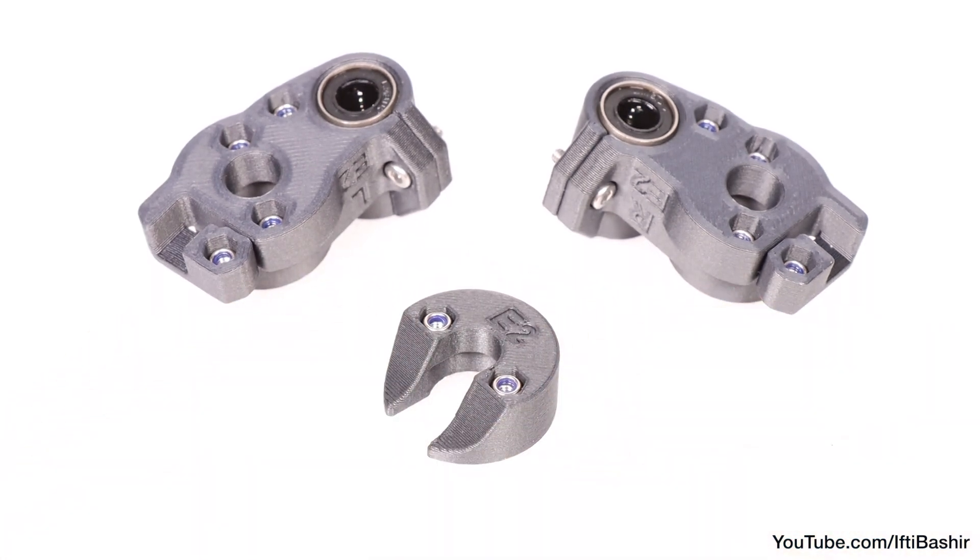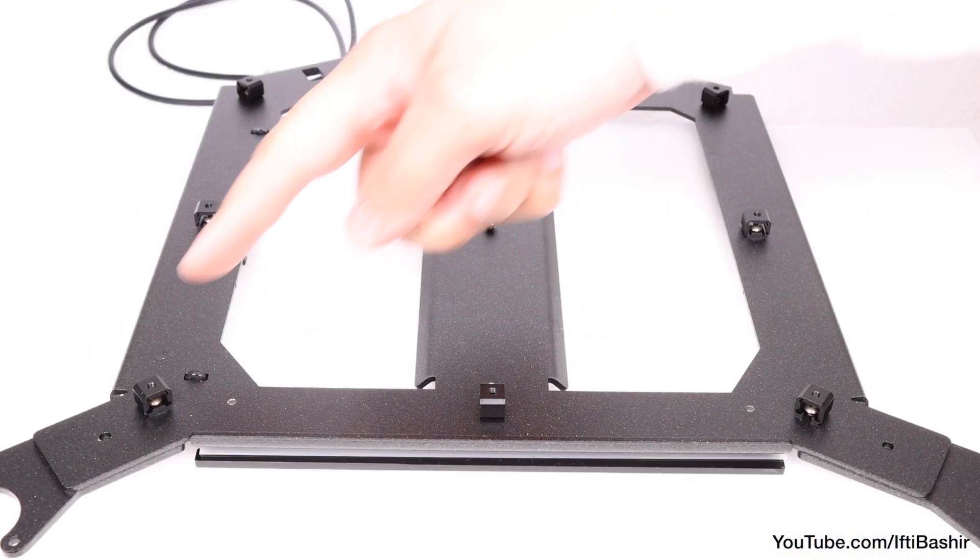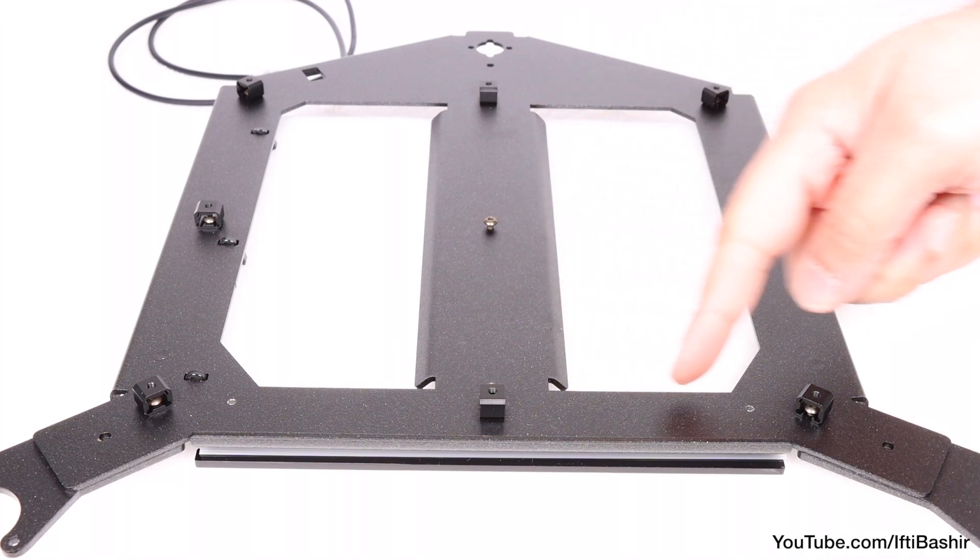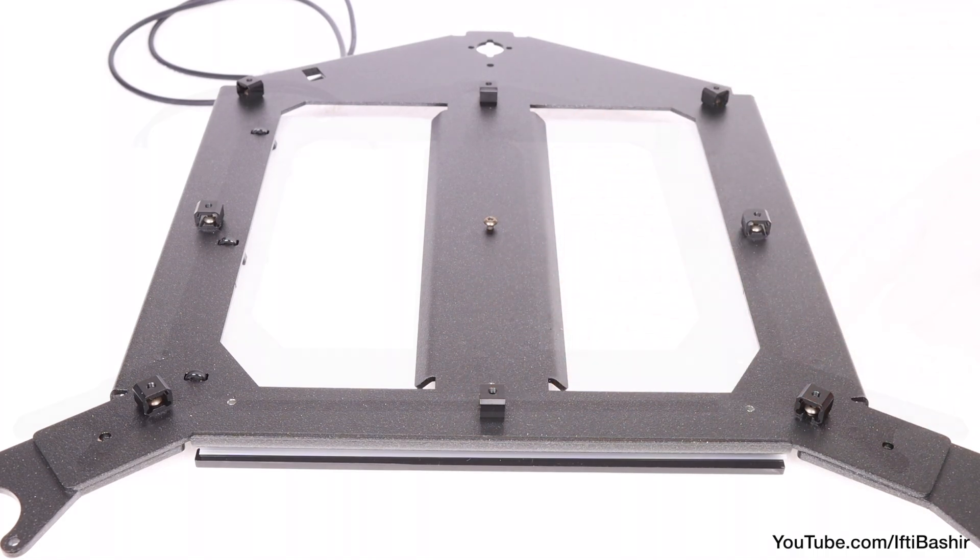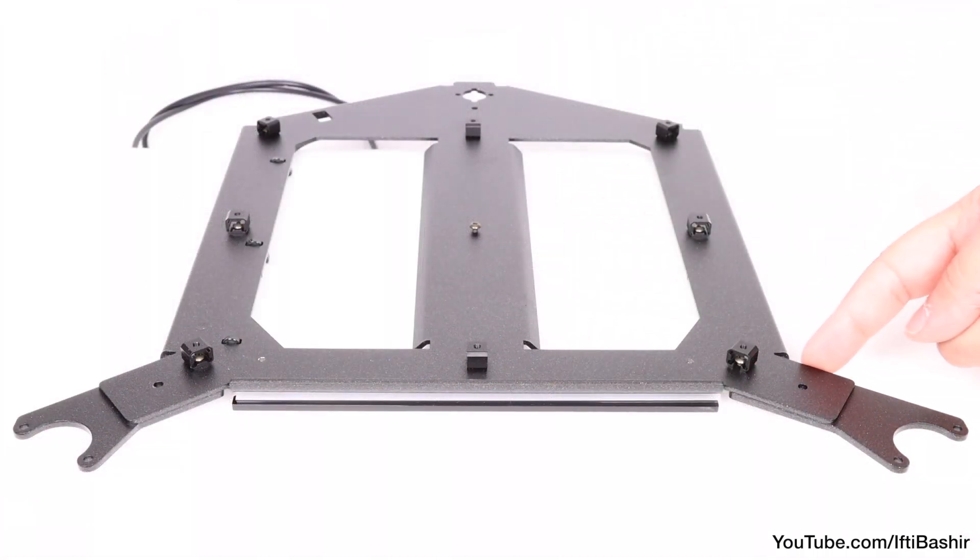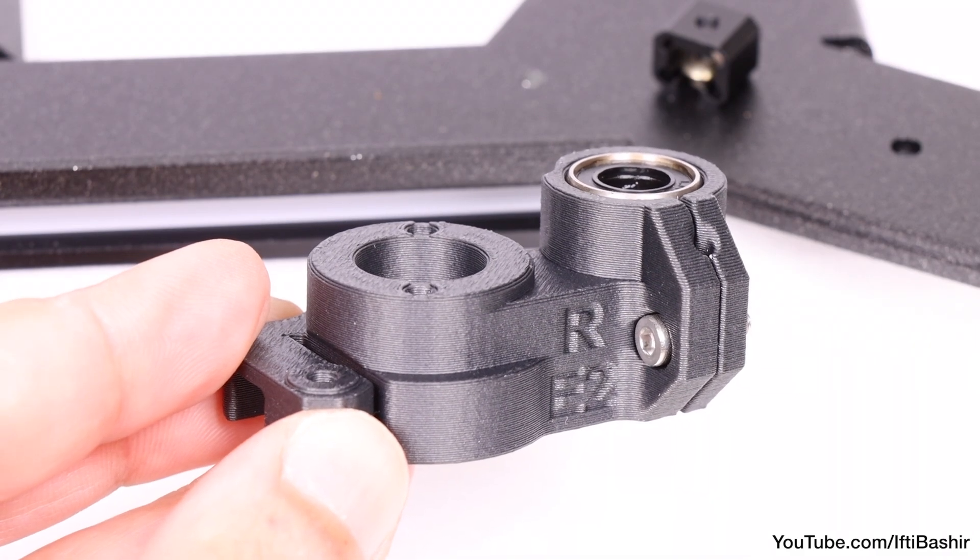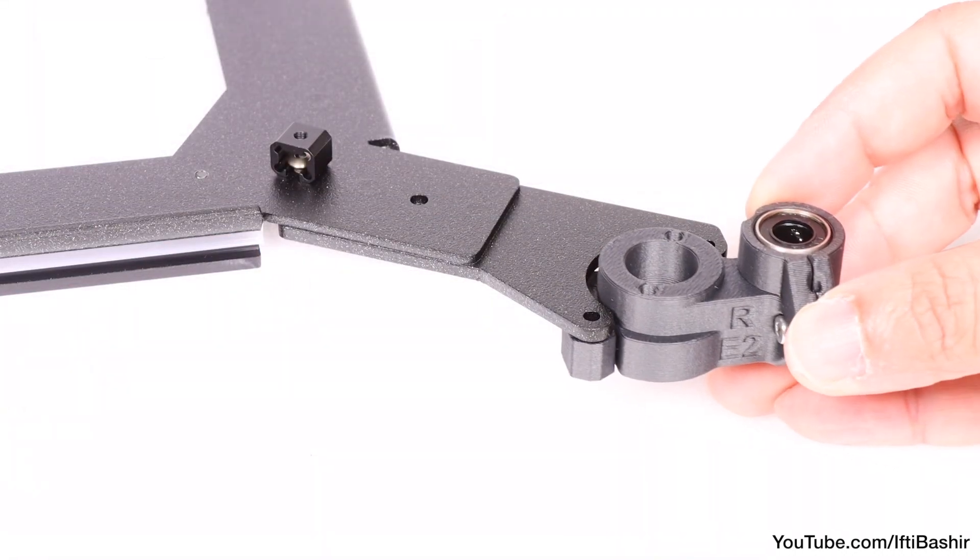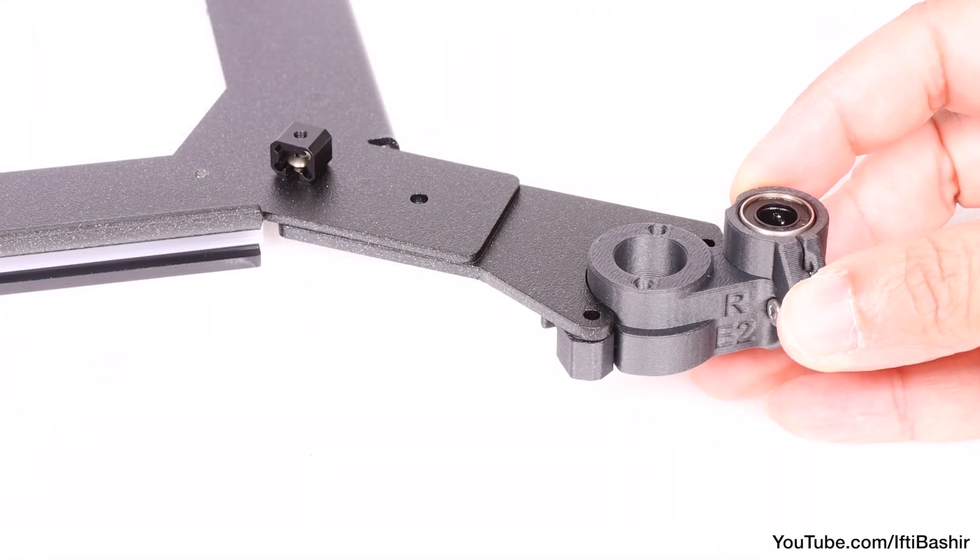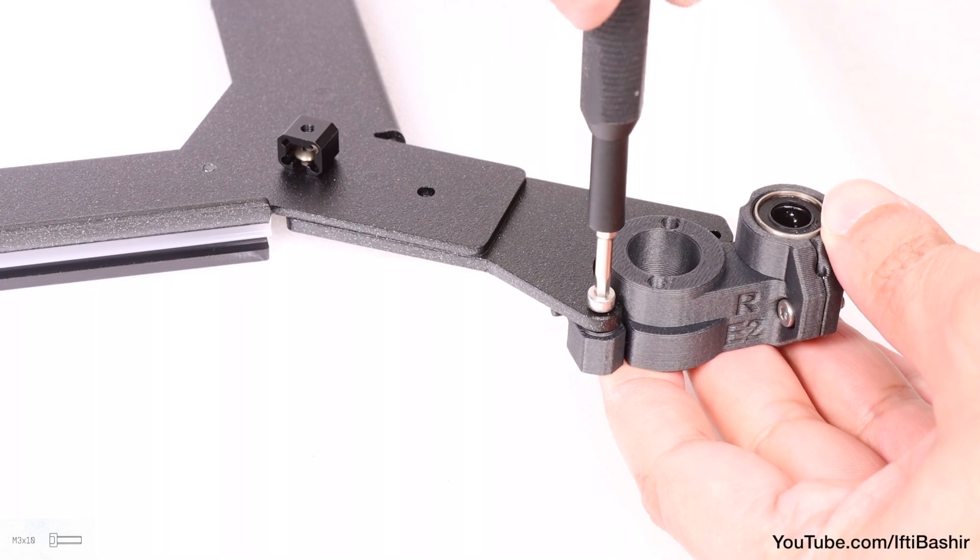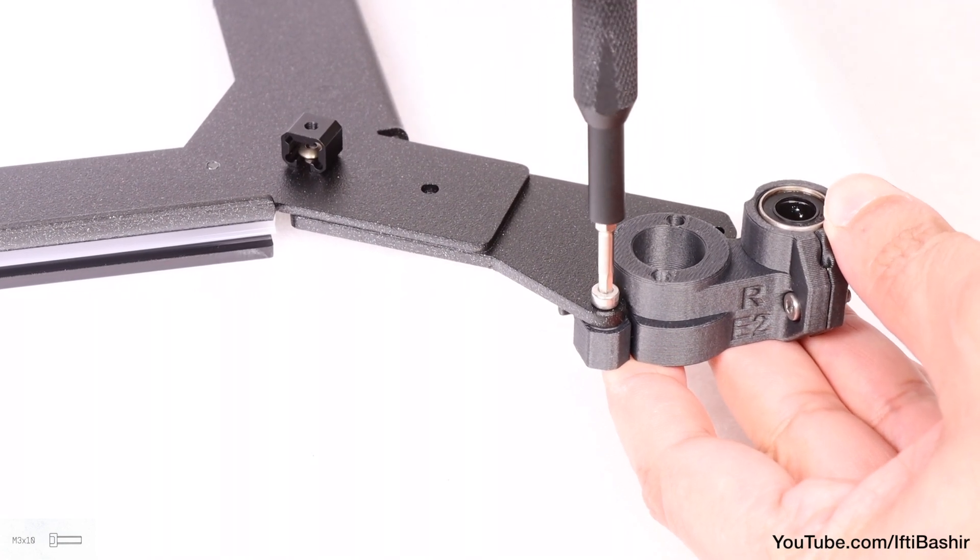These can now be installed onto our bed carriage. With the bed carriage placed so that the expansion joints are facing up, and the two corner protrusions facing towards you, locate the right bed mount. It will clearly have the letter R printed on it, and proceed to insert this one onto the right carriage fork in this orientation, before securing into place using two M3 by 10 screws.